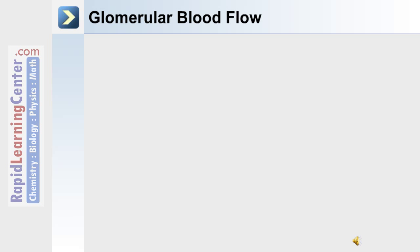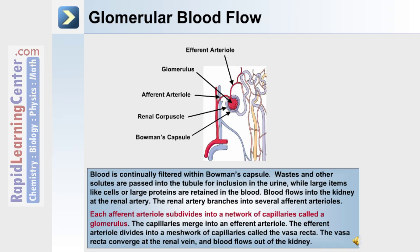The filtration of blood takes place at the glomerulus. Blood is continually filtered within Bowman's capsule. Wastes and other solutes are passed into the tubule for inclusion into the urine, while larger items, such as cells and proteins, are retained in the blood.